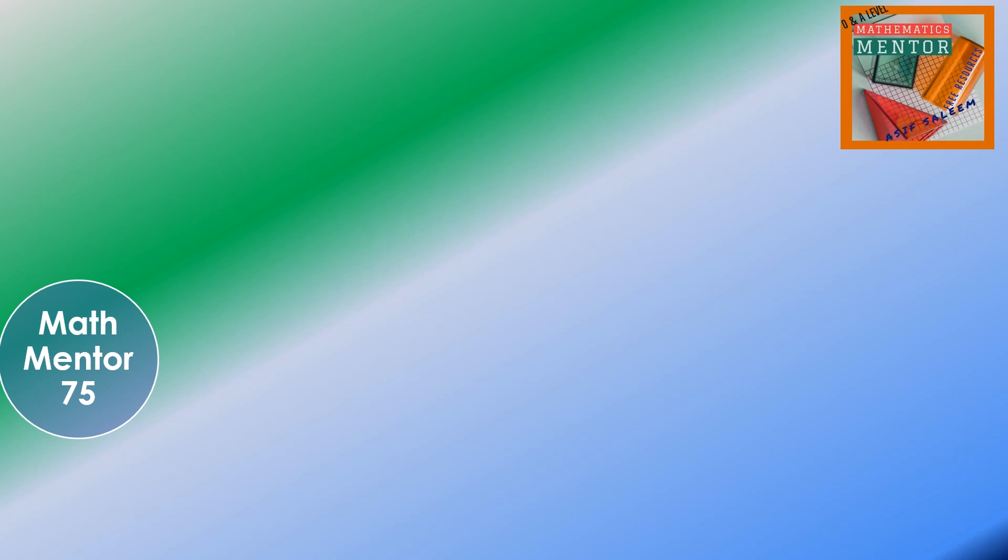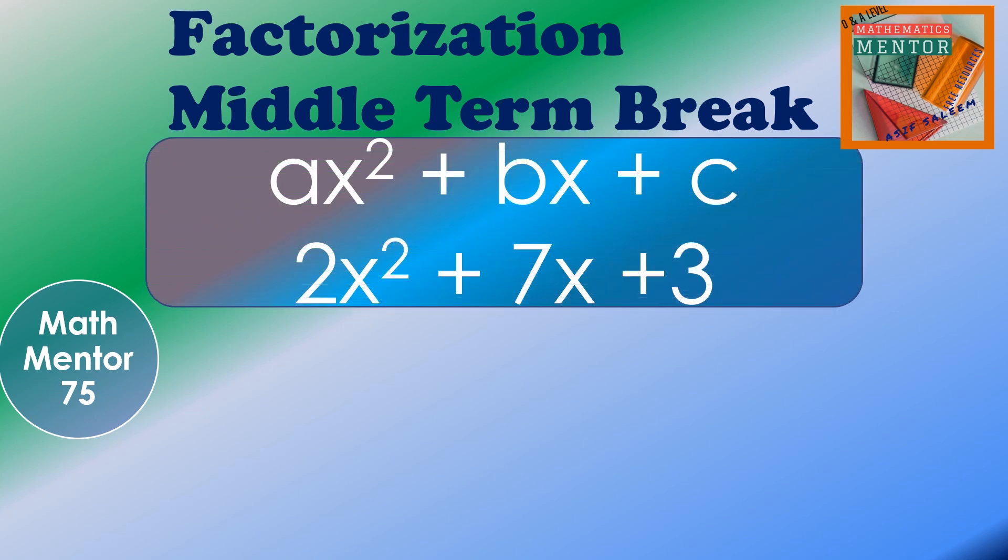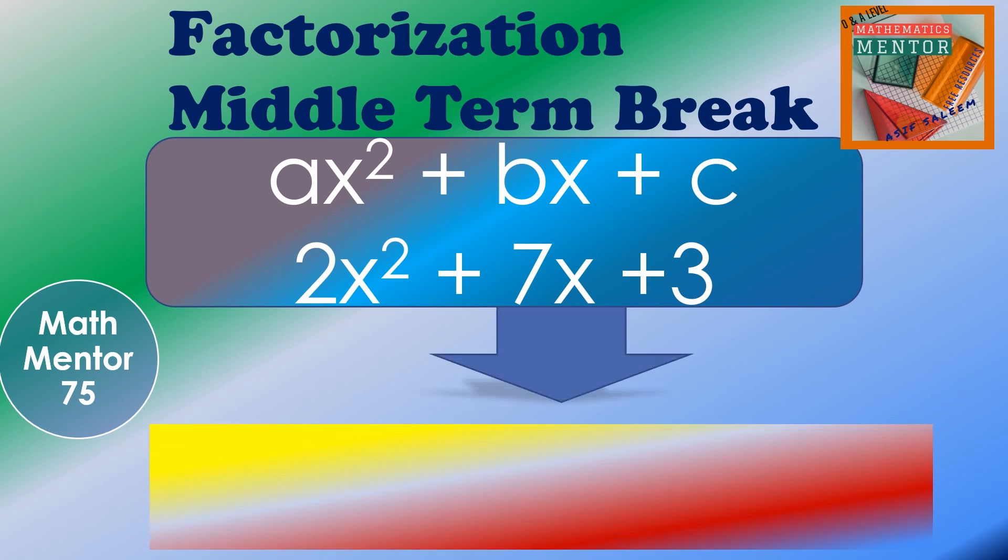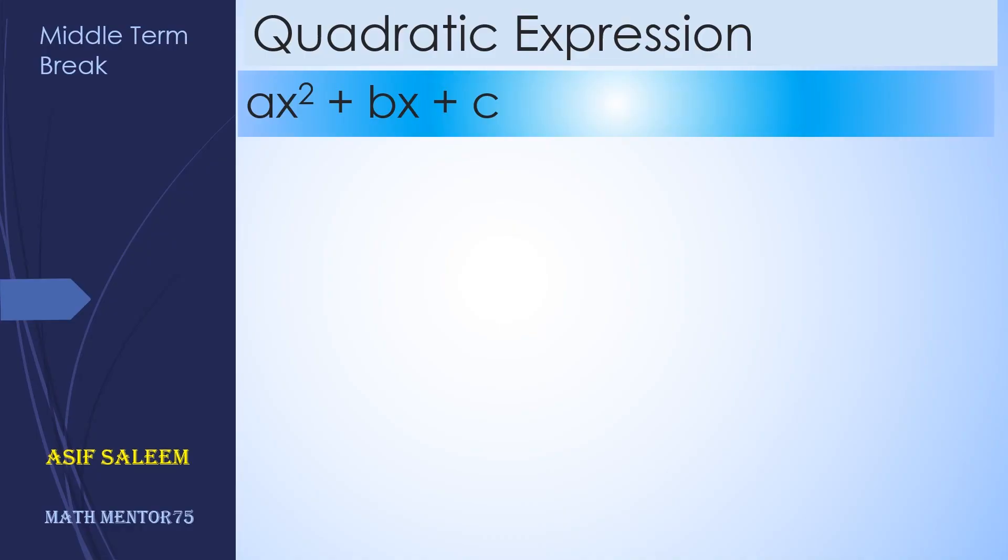Hello class, our today's topic is factorization using middle term break. If we have a quadratic equation like ax² + bx + c, then how are we going to do the middle term break so that we can factorize it? We are going to apply middle term break—that is, we are going to split b into two numbers, let's say m and n.